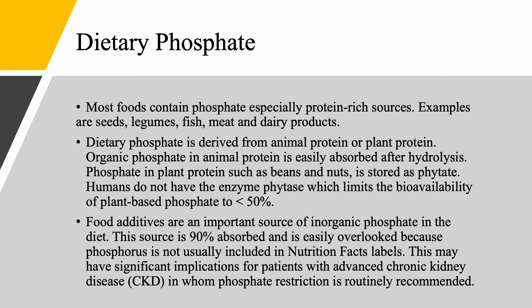Most foods contain phosphate, especially protein-rich foods — seeds, legumes, fish, meat, and their products are all rich in phosphate. Dietary phosphate comes from either animal or plant sources. Organic phosphate in animal protein is easily absorbed after hydrolysis, so you absorb most of it. When phosphate is in plant proteins such as beans and nuts, it is stored as phytate. Humans do not have the enzyme phytase; therefore, the bioavailability of plant protein phosphate is less than 50%. The phosphate from animal protein is almost completely bioavailable.